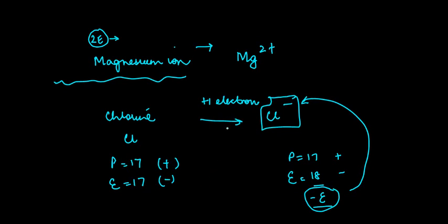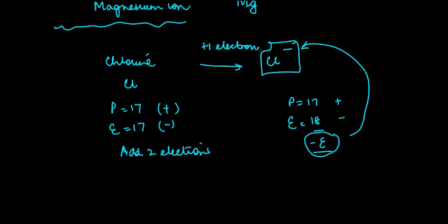Like I told you for the cations, even in case of anions you can have a situation where you add two electrons. So if you add two electrons, then basically what will happen is this case will become something like,